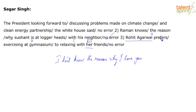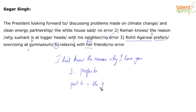We moved on to the third question — looking at A, B, C. Prefers already takes up the preposition to, so the collocation is fine. The only error I see is this. Also in part B, I will go ahead and introduce the definite article in front of gymnasium — it kind of looks empty. Rohit Agarwal prefers exercising at where? Specifically, at the gymnasium. So I'll introduce the definite article, the.